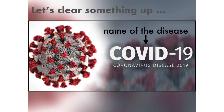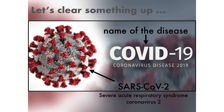The 19 refers to the year that the disease entered the human population, which happened late last year. The name of the virus is SARS-CoV-2, or Severe Acute Respiratory Syndrome Coronavirus 2. This name was chosen because the virus is genetically related to the coronavirus responsible for the SARS outbreak of 2003. While related, the two viruses are different. There are many types of coronaviruses — some are quite mild and are even the cause of the common cold.